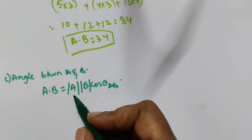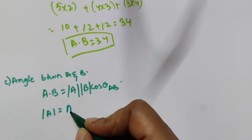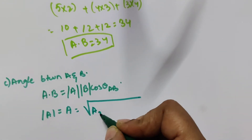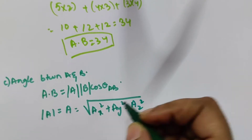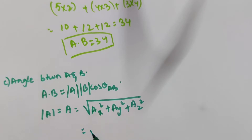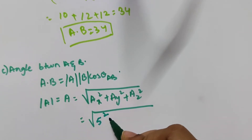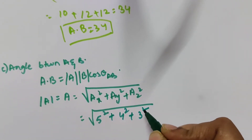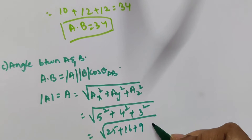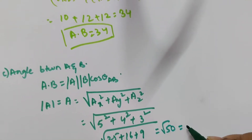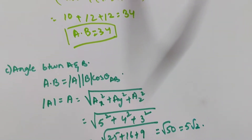The magnitude |A| is calculated as: |A| = √(Ax² + Ay² + Az²) = √(5² + 4² + 3²) = √(25 + 16 + 9) = √50, which can also be written as 5√2.